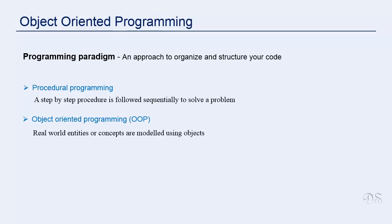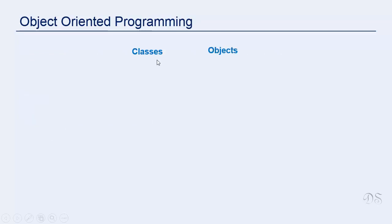First, let us see the common terms used in object-oriented programming. Classes and objects are the two main components of object-oriented programming.